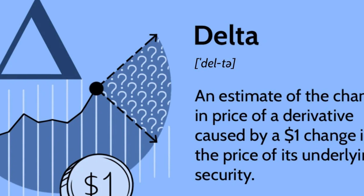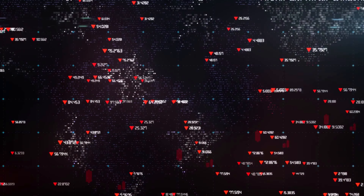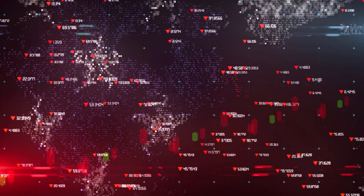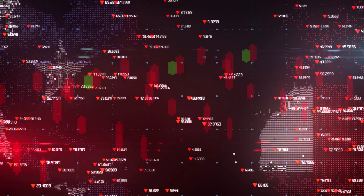Options with higher Delta, positive or negative, are also referred to as Delta neutral because they can potentially remain unchanged despite large movements in the underlying asset due to their high sensitivity to those changes. These Deltas can also be used for hedging purposes, which we'll explain in another video.